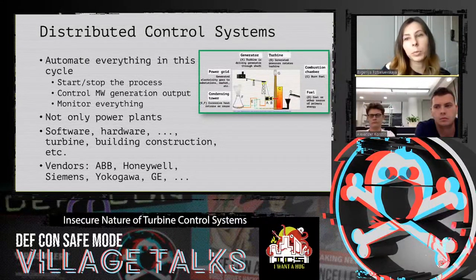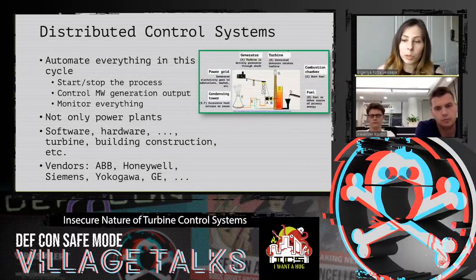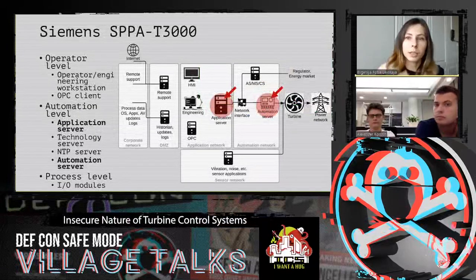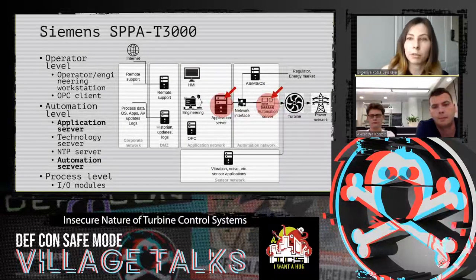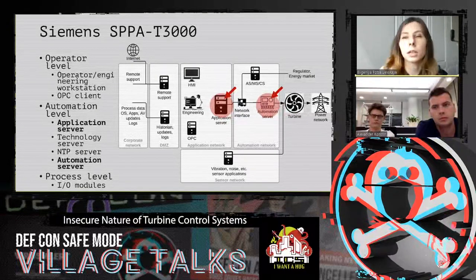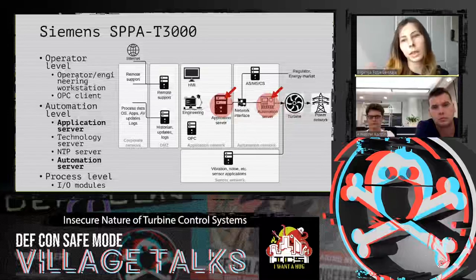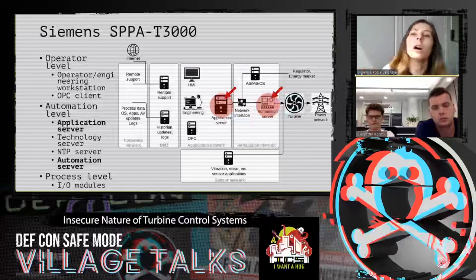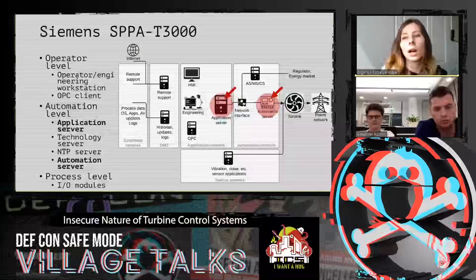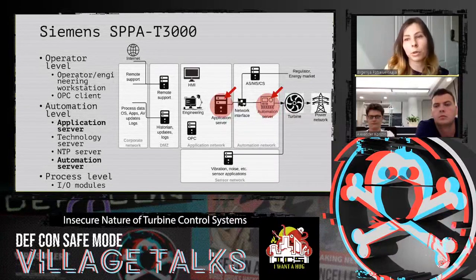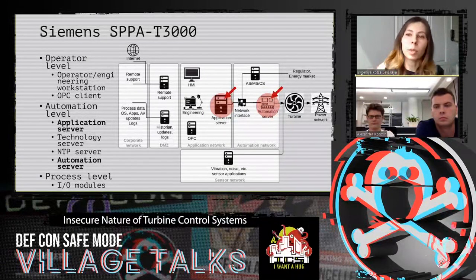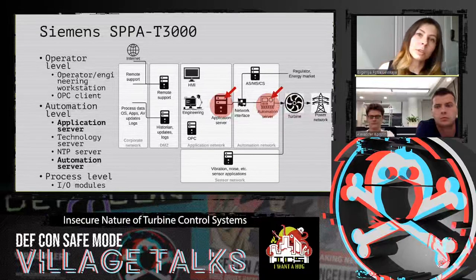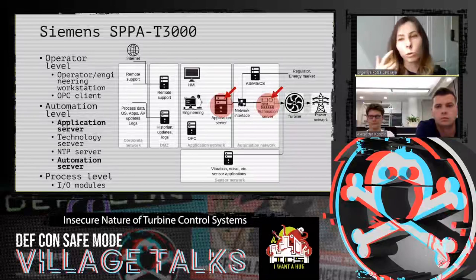Someone comes to a vendor and says: we have an empty field, please build us a power plant. There are many vendors who do this, but today we will be talking about Siemens. The DCS from Siemens that we analyzed is called SPPA-T3000. Just like other DCSs, it consists of many different industrial components — PLCs, OPC, different servers, HMI, and a lot of things — and it may have very different architecture depending on the site. But there will be two components unique to SPPA-T3000: the application server and the automation server. We will structure our talk around those: first application server, then automation server, then conclusions.